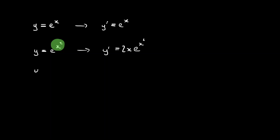Let's try another one. Let's say we've got y is equal to e to the power of x to the 5. We still have e to the power of x to the 5, then we differentiate that power, which gives us 5x to the power of 4, and we multiply through.